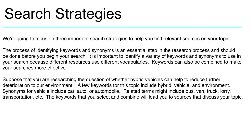We're going to focus on three important search strategies to help you find relevant sources on your topic. The process of identifying keywords and synonyms is an essential step in the research process and should be done before you begin your search. It is important to identify a variety of keywords and synonyms because different resources use different vocabularies.